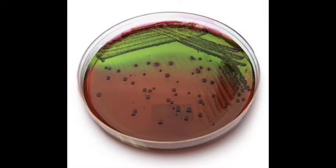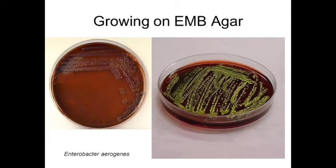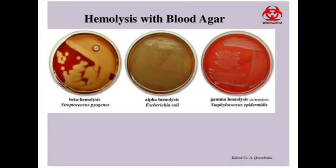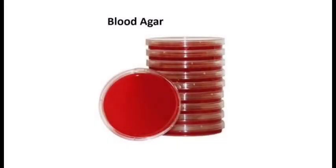Differential media contain compounds that allow groups of microorganisms to be visually distinguished by the appearance of the colony or surrounding media. An example is eosin-methylene blue, which is differential for lactose and sucrose fermentation. Enrichment media is used to favor the growth of microbes found in very small numbers, and unlike selective medium, does not necessarily suppress other microbes. It is used mainly for fecal and soil samples — an example is blood agar, which uses nutritionally-rich whole blood to supplement basic nutrients.